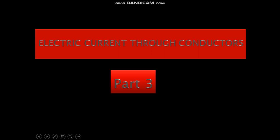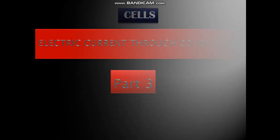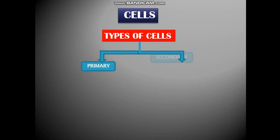In Electric Current Through Conductors Part 3, we are going to talk about the cells. The types of cells are the primary cells and the secondary cells.